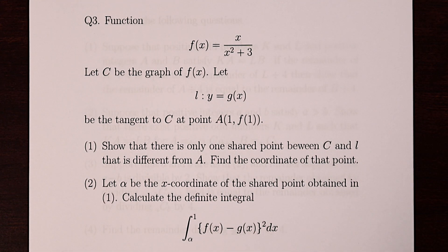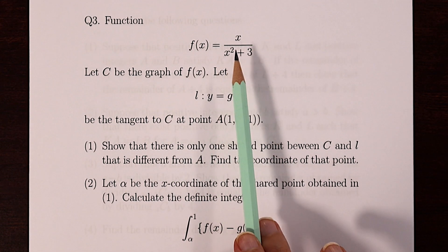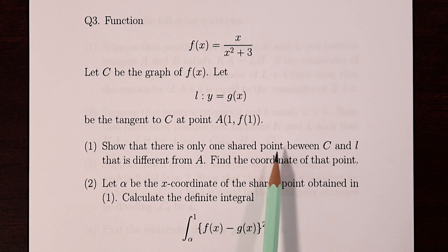Here's question three. We have a function called C, a tangent to that function at a point a, and we're asked to show that there's only one other shared point between C and the tangent that is different from a, and to find the coordinate of that point. Then for part two we're using that x coordinate and having to calculate an integral.